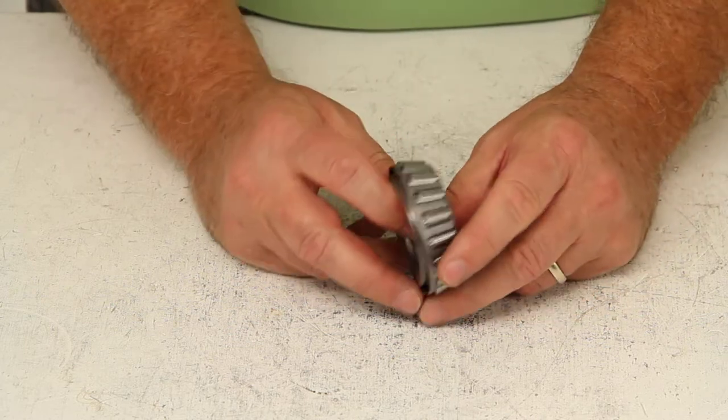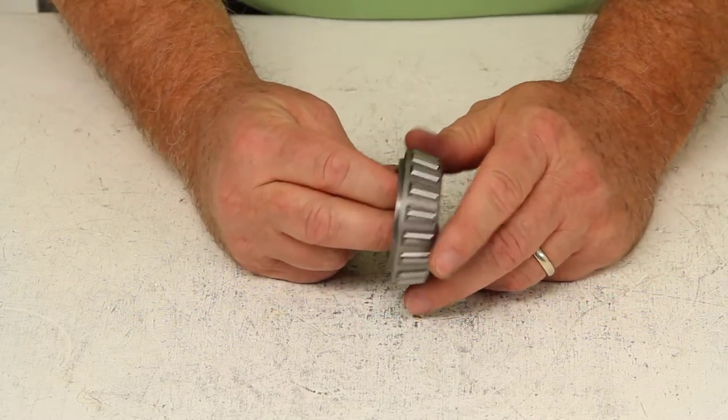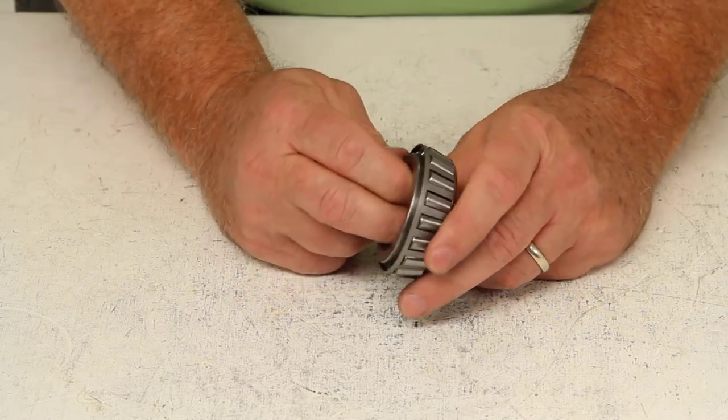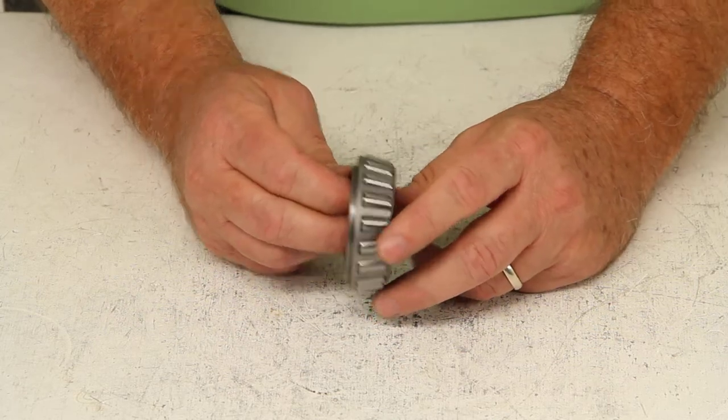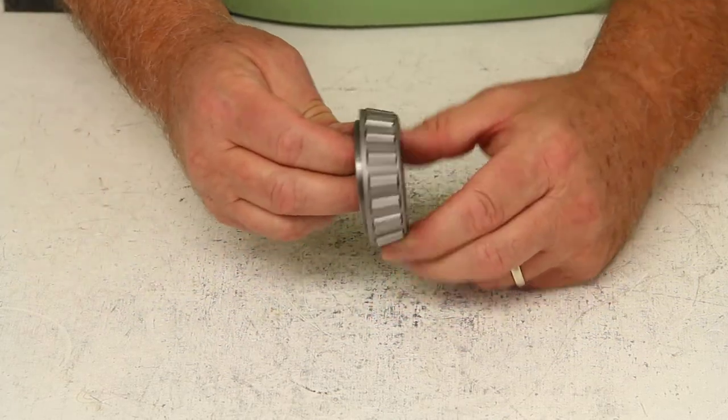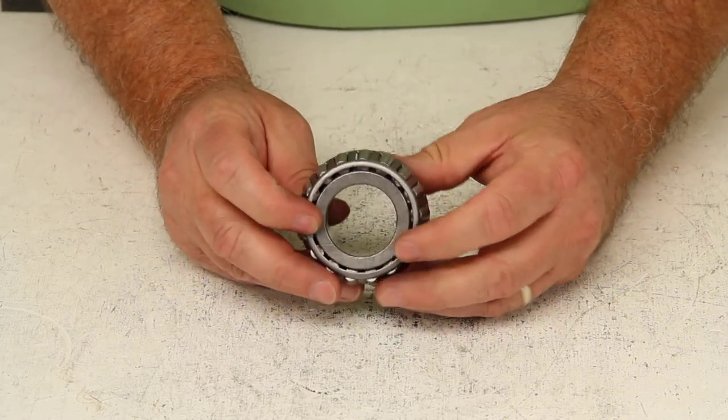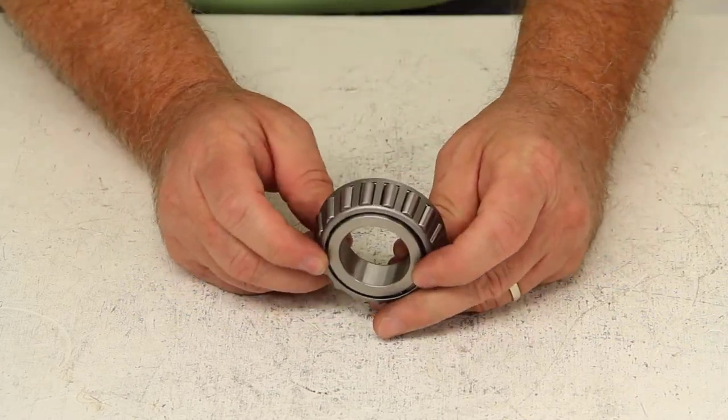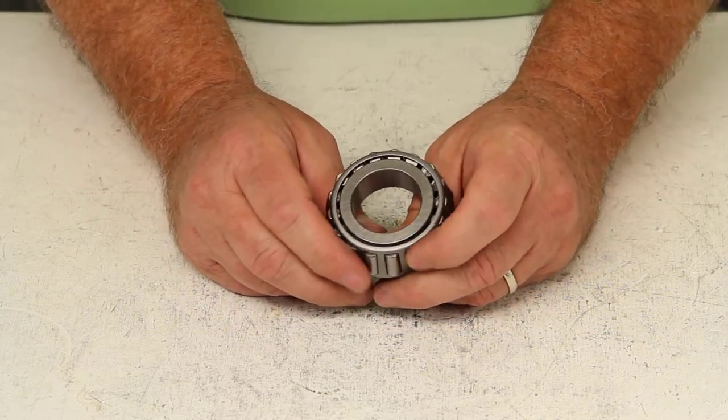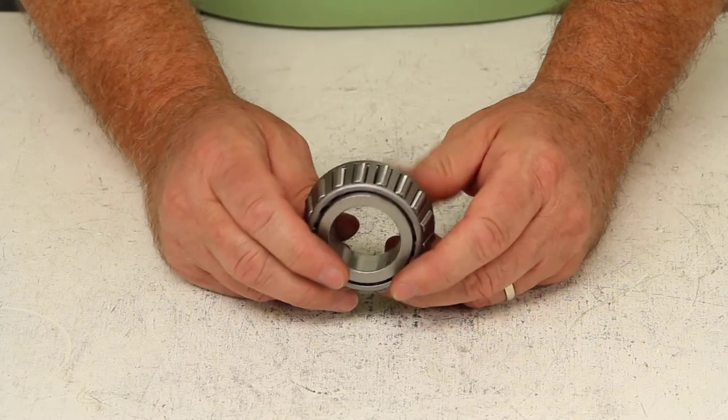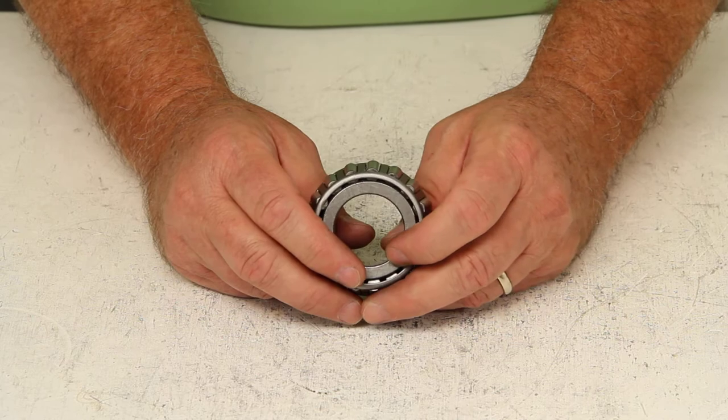Now there is one other piece that is required for this, and that is the race, the bearing race. The race would be the part that is normally pressed into the hub, and that would give a spot to where when the bearing is inserted it would rotate on that bearing race. Now for this bearing part number, the correct race, which is sold separately, would be part number 14276. And the outer diameter is the critical measurement on the race, and on that part number would be 2.717.